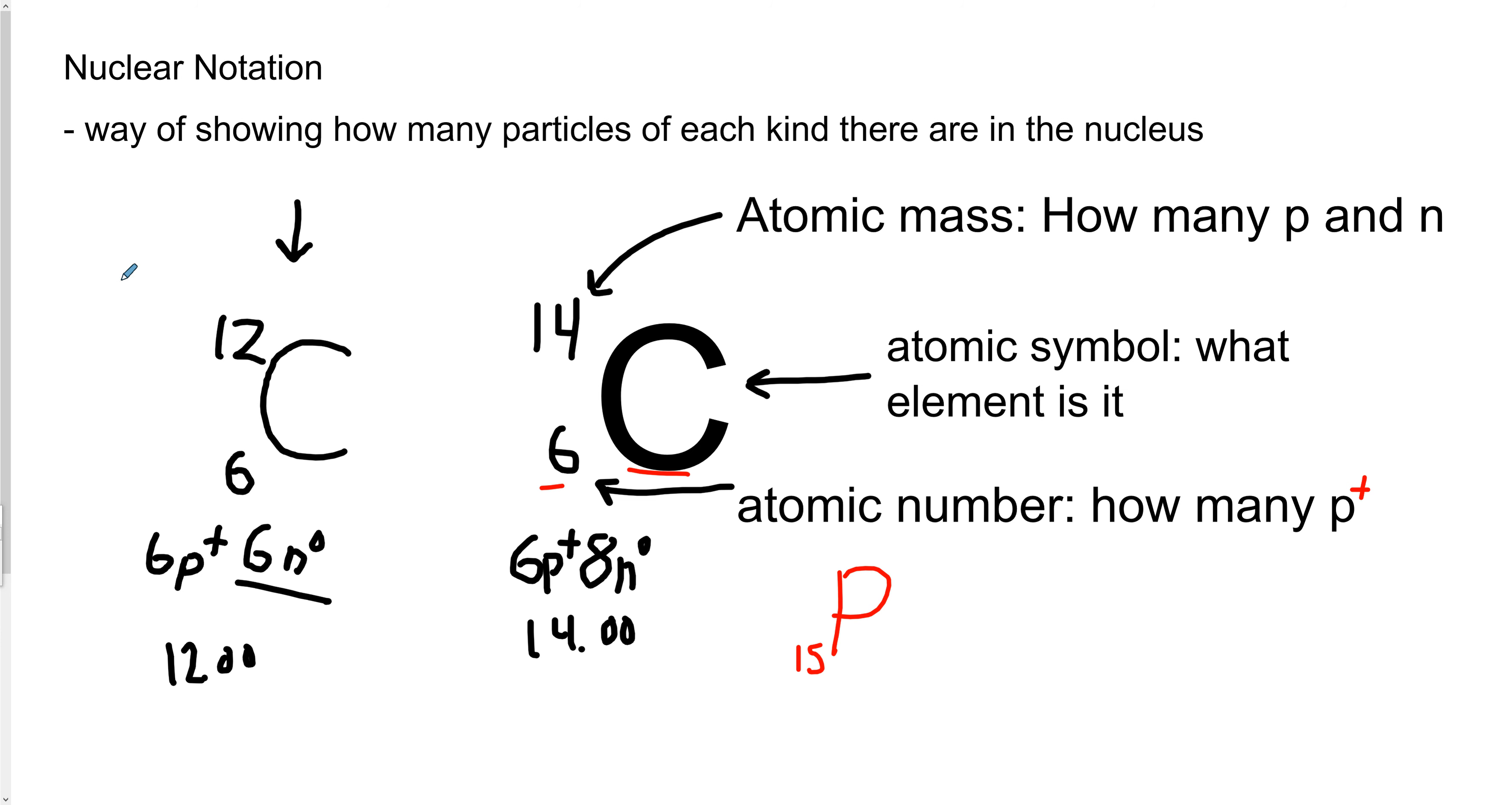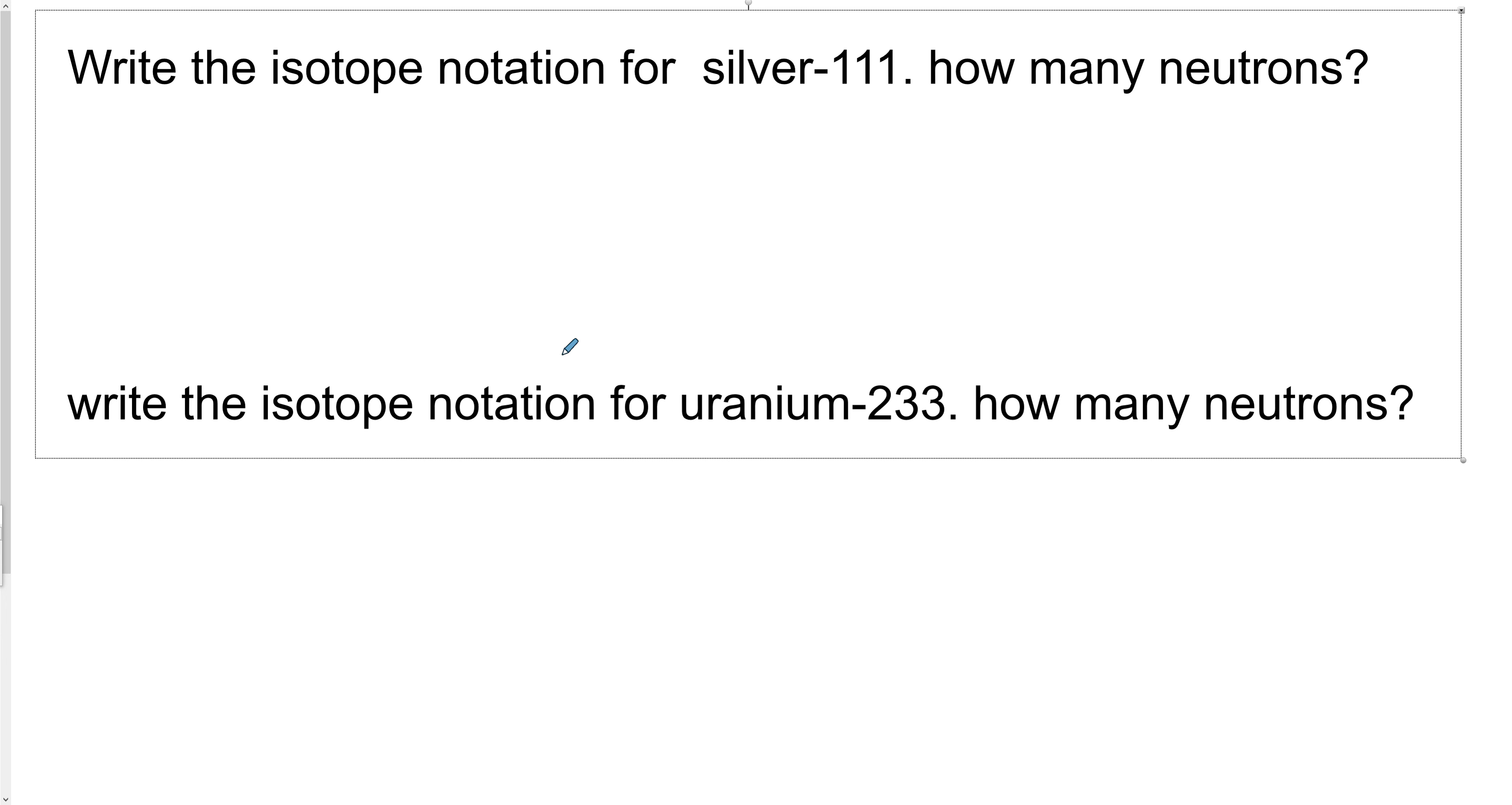So how would we ask you to do this in a question? Really simple. We could say something like, write the isotope notation for silver-111, how many neutrons do we have? This is a very easy question. All you need is your periodic table. You can use the one in your data booklet or in your textbook. Don't care.